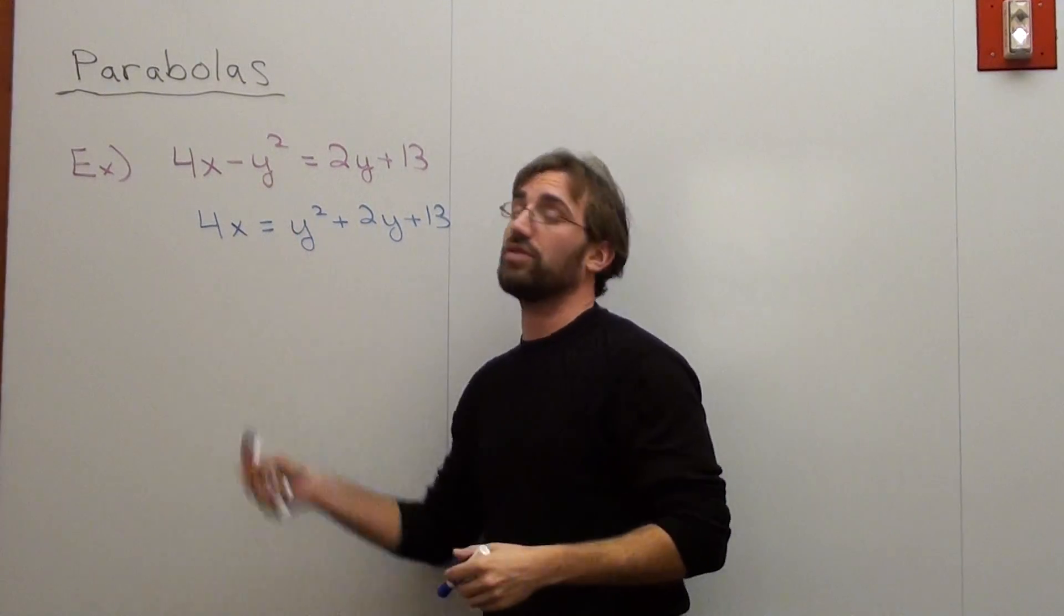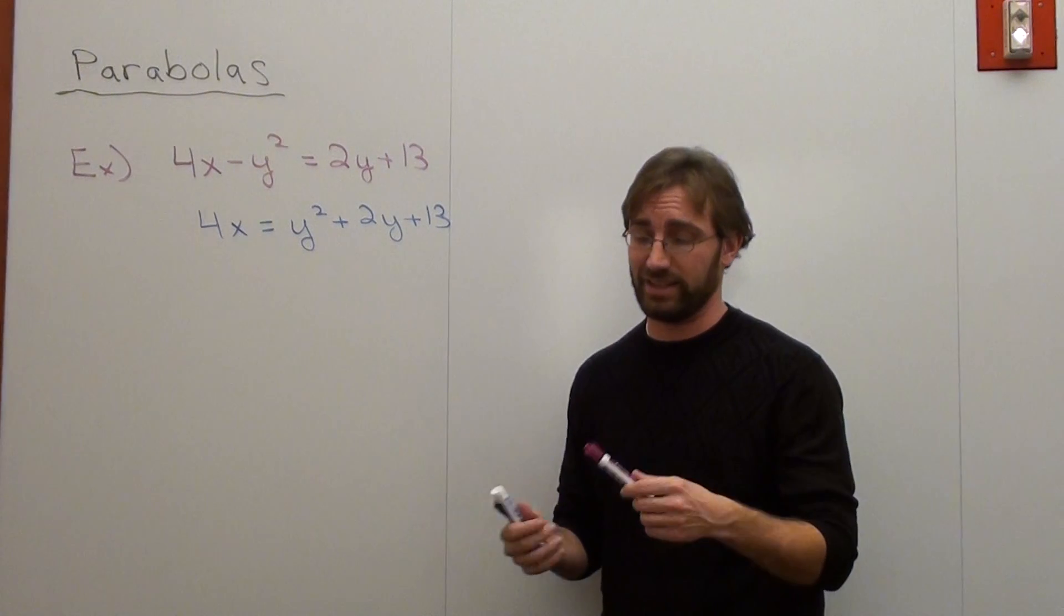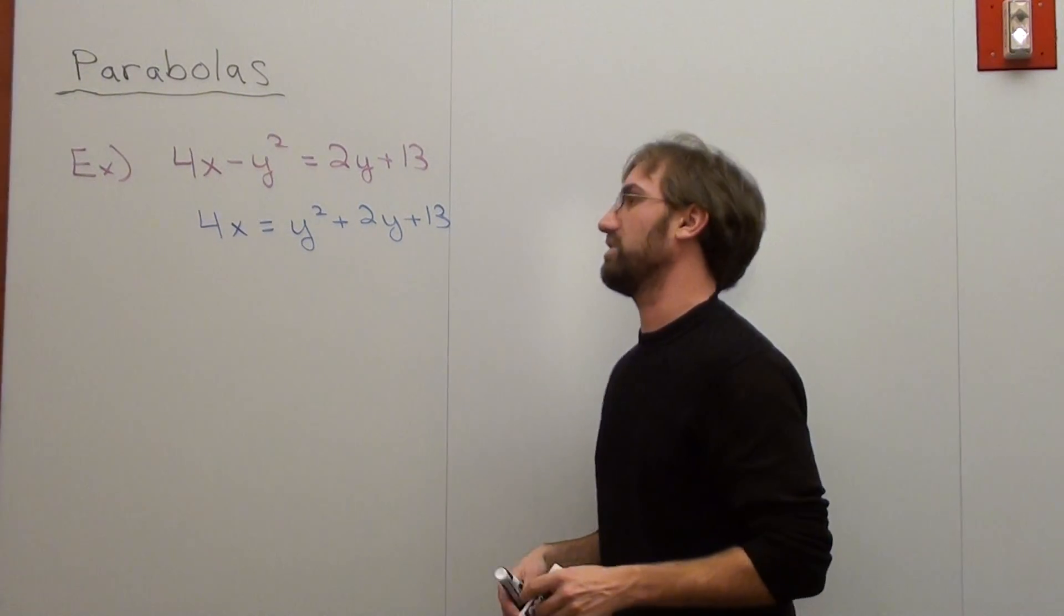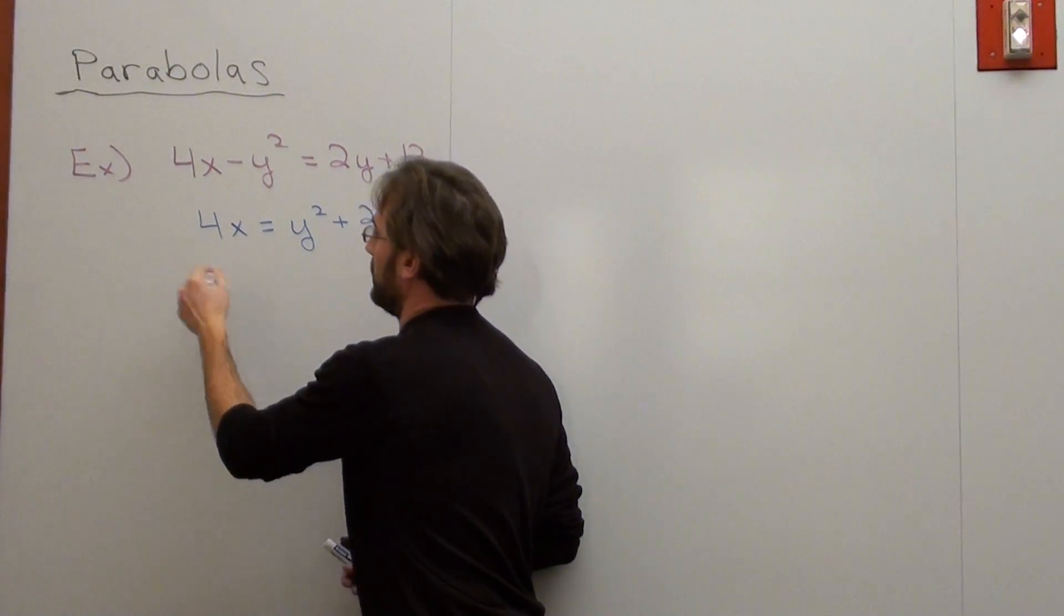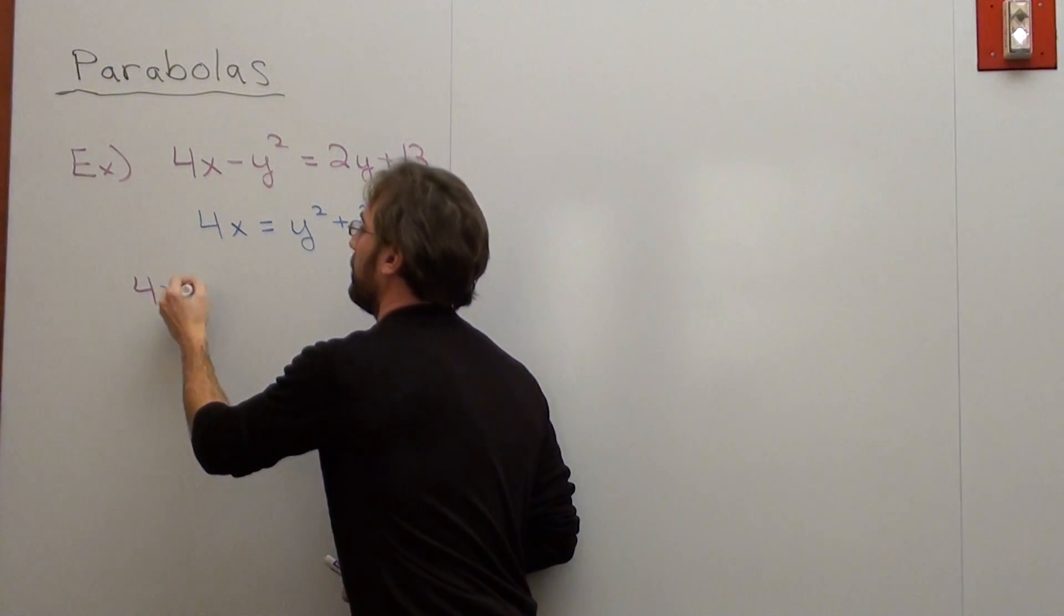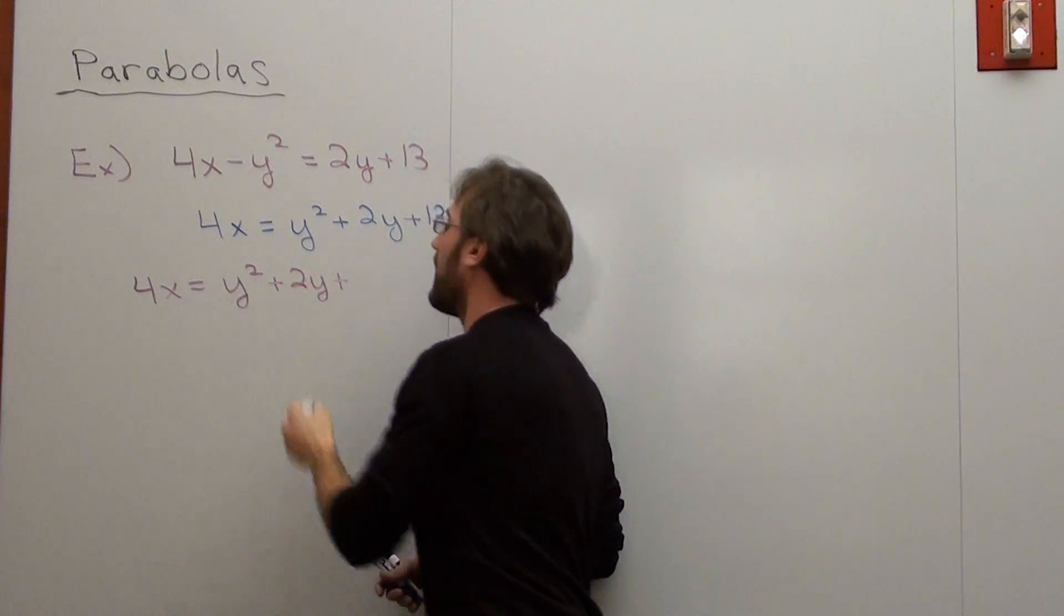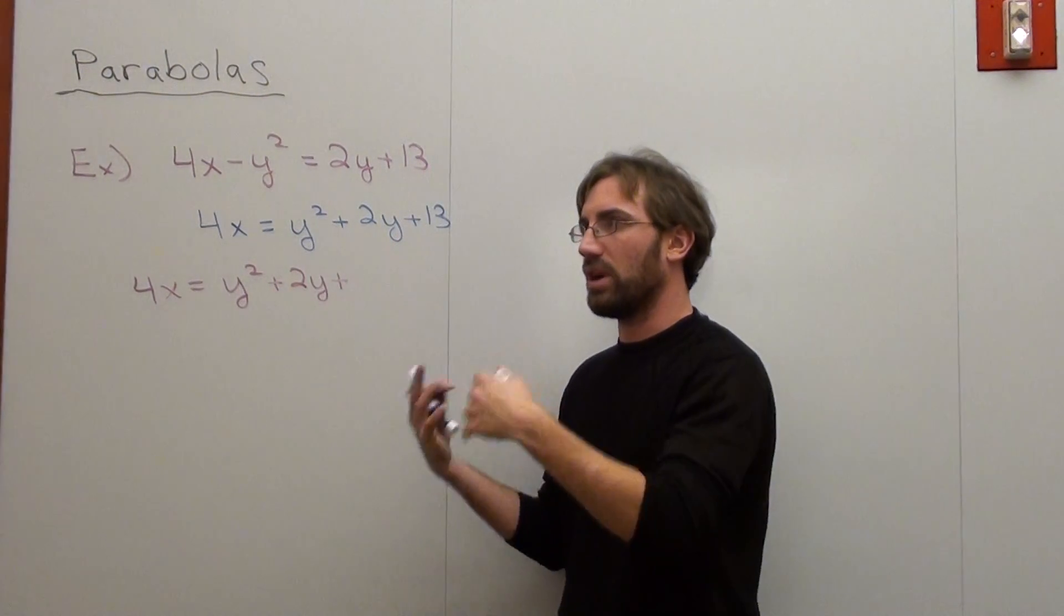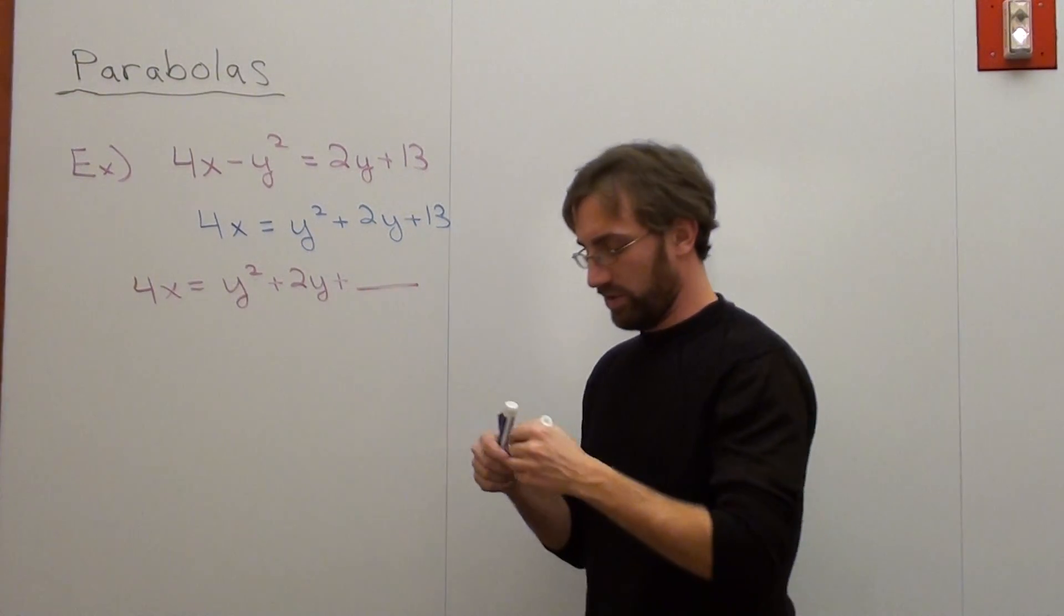Fortunately, there's no coefficient in front of y squared, so I don't have to do that GCF factoring stuff beforehand, like I did in the last example. So I'm going to use completing the square in order to figure it out. I want to turn this into a vertex form. 4x equals y squared plus 2y plus, I don't know what the number is that I'm going to be working with, but I'm going to use completing the square to figure it out.